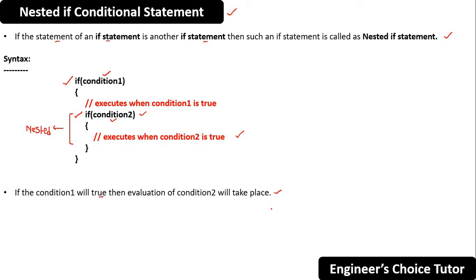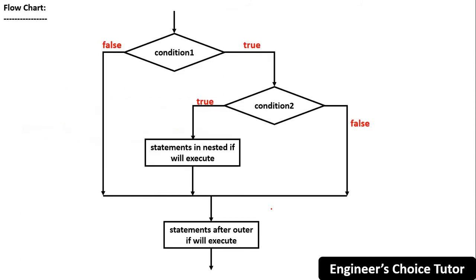Now let's see the flowchart for nested if based on the syntax we covered. If condition one is true, then condition two will be evaluated. And if condition two is true, then the statement inside the nested if will execute. Then control will go out from the nested as well as the parent if statement, and the statements after the outer if will execute. This is the positive case where both condition one and condition two are true.